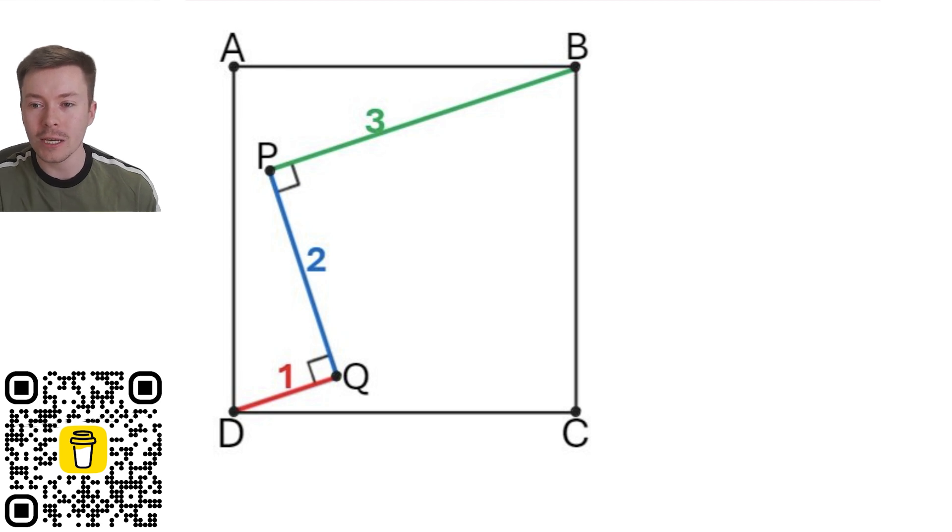So the first thing that you would want to do, I've obviously tried a few different ideas beforehand, and you will need to play around with it a little bit to see what you can do. But one method that I found that was successful was introducing this line that goes from corner to corner. Now the reason why that's successful is because it gave me two similar triangles.